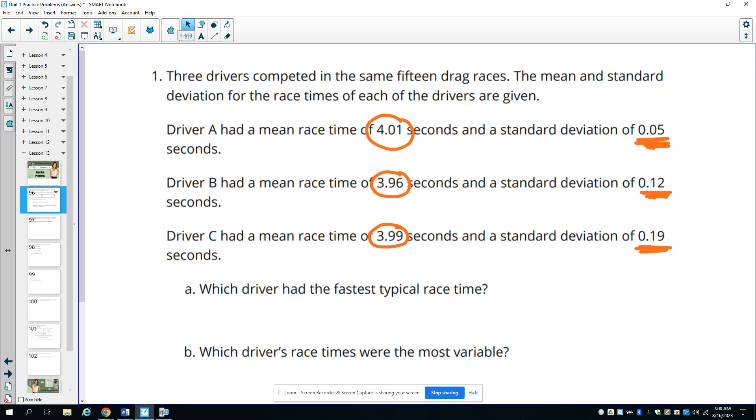So then this question goes on to ask us which driver had the fastest typical race time. So when you're talking about typical race time, you want to be looking at a measure of center, in this case the mean. So for this one, driver B has the fastest typical time at 3.96 seconds, so just under 4 seconds.